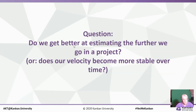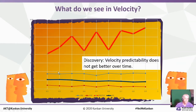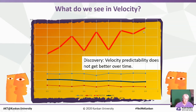Then the question we asked was: do we get better at estimating the further we go into a project? Does our velocity become more stable over time? In fact, no — velocity predictability does not get better over time. We aren't getting better estimators or better predictability of velocity. A lot of things people say — 'velocity is going to get better over time' — it doesn't show up in the data. In fact, to a certain extent it actually gets worse. The solid red line is going up, meaning our range of predictability is getting higher, meaning our predictability is lower.